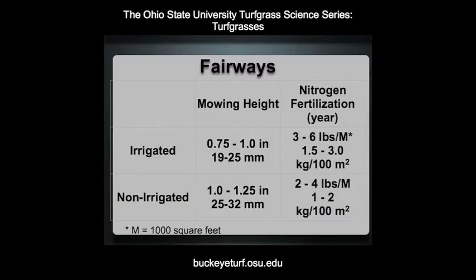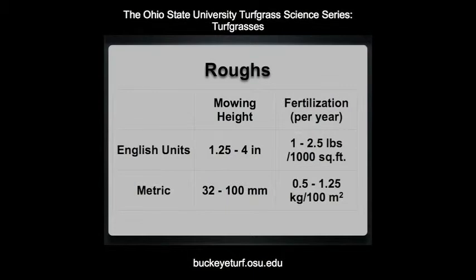At the lower range of mowing heights, normally below one inch, Poa annua can become extremely competitive in irrigated Kentucky bluegrass fairways. In roughs, Kentucky bluegrass is mowed at an inch and a quarter or higher and normally fertilized with one to two pounds of actual nitrogen per thousand square feet, with application split between spring and fall.